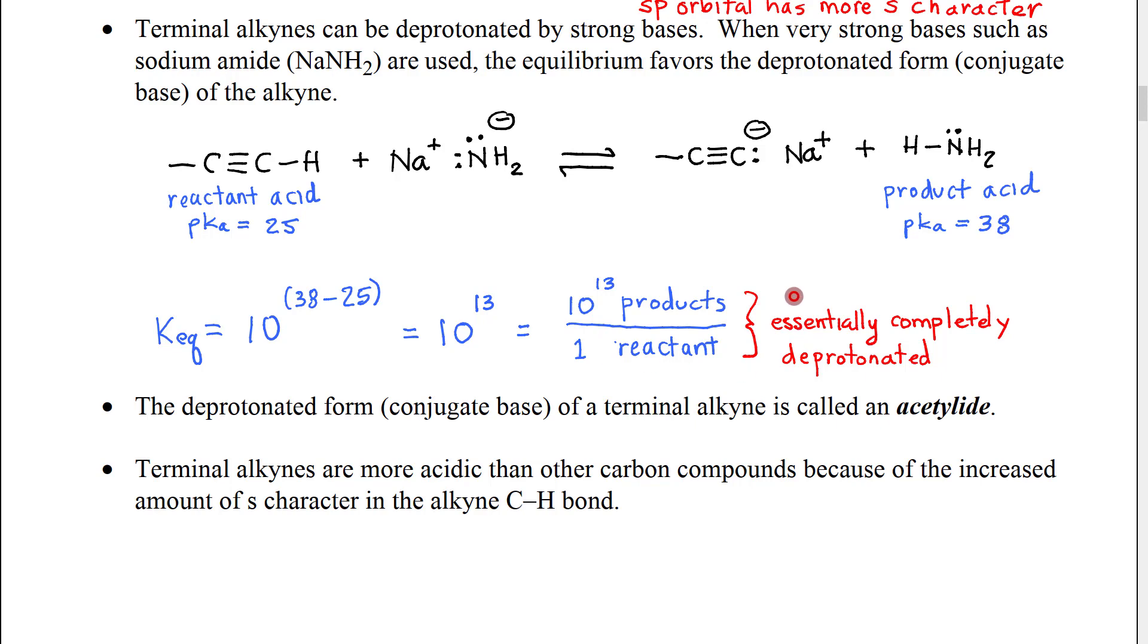on our K equilibrium, what that really means is that we have a large number of products per one reactant. And so 10 to the 13 products per one reactant. We would say that this is essentially completely deprotonated, given that the number of decimal places that it would be required to measure the concentration of reactants would be 13. We almost never work with 13 significant figures. So it would look to us like it was essentially zero reactants left over.